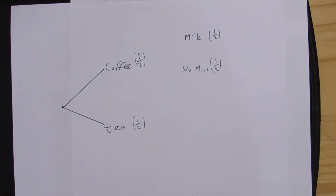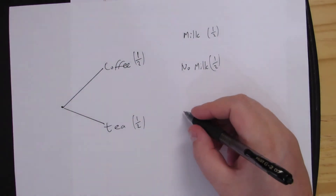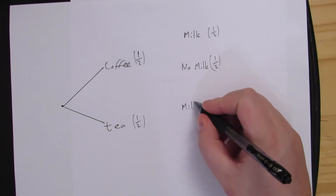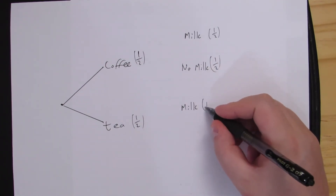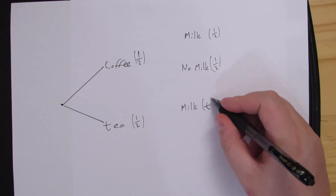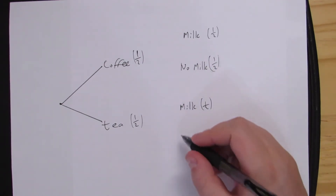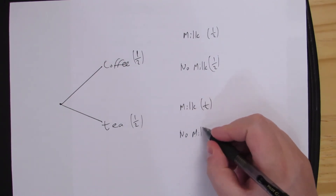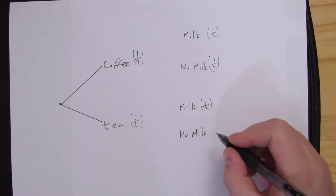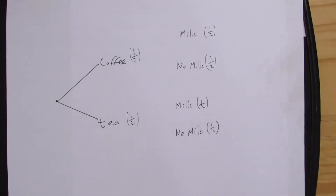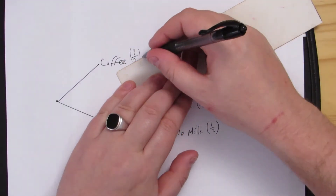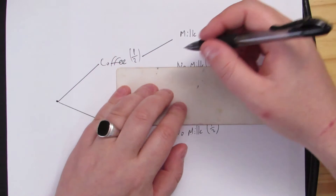In the case of the coffee, I have a 50-50 chance for milk or no milk. With the tea, it's a similar situation — we can choose milk at a half, or no milk also at a half. That then gives me two more branches.